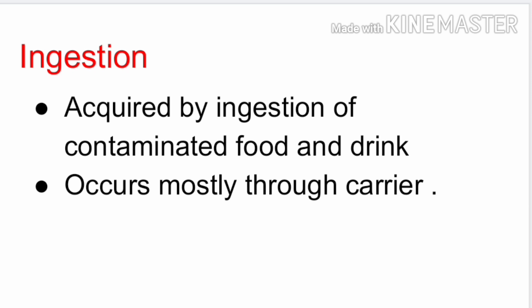Next is ingestion. When we eat something contaminated or unhealthy food, in that case bacteria directly goes into the body and causes disease. For example, during the coronavirus pandemic, if you ordered a pizza from outside, you do not know who made it. Maybe the person who made the pizza was infected with coronavirus. They touched the pizza with their hands, and when you eat it, the virus enters your body through ingestion. The infected person in this case we call a carrier.